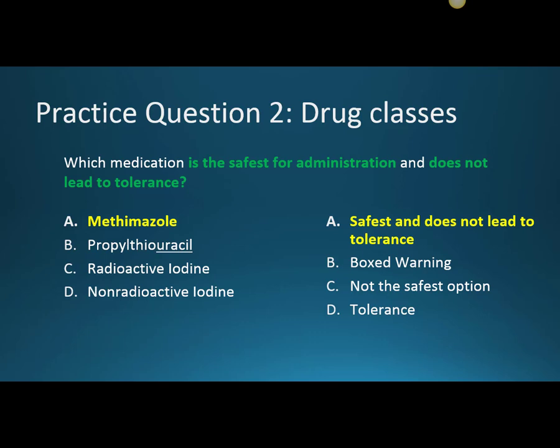Propylthiouracil (B) and radioactive iodine (C) are the two options with the highest side effect profile. PTU has a black box warning for hepatotoxicity. Radioactive iodine is not the safest option either, as its main role is thyroid destruction, which can lead to serious consequences. While non-radioactive iodine (D) is safer than PTU or radioactive iodine, it can lead to tolerance, which is why D is incorrect.